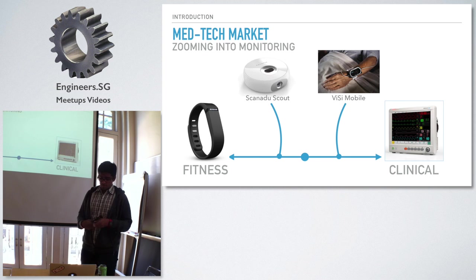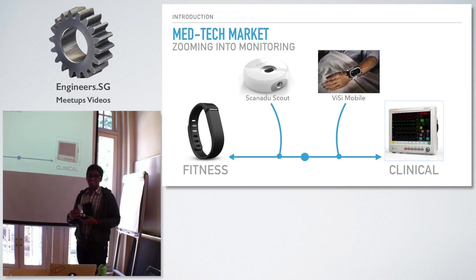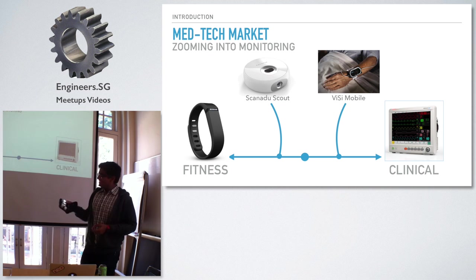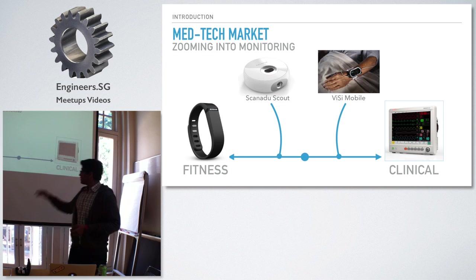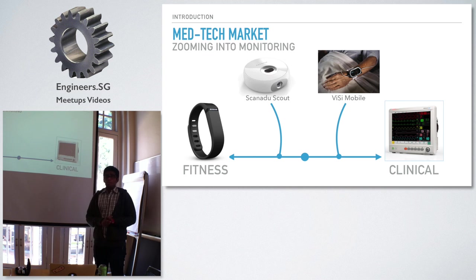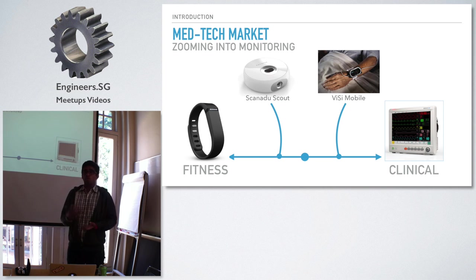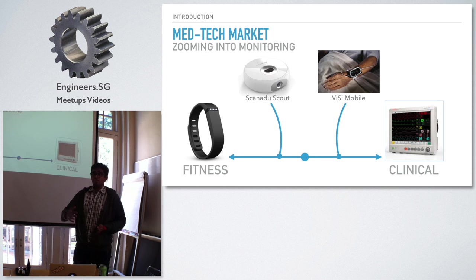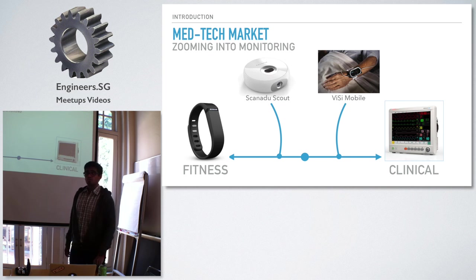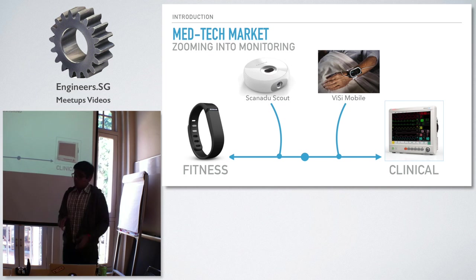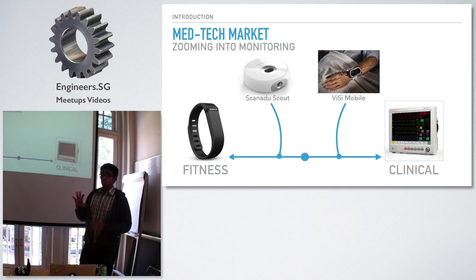On the other hand, you have things like a glucose monitor, which is more on the clinical side. What differentiates these two is majorly legal aspects — it's not about the features, it's about the claims you make. If you claim your device can be used by doctors, you need to go through FDA clearance. If a wearable device claims it can reduce diabetes by a certain percentage, it will have to go through quite a few regulatory clearances.